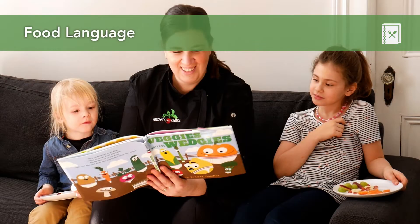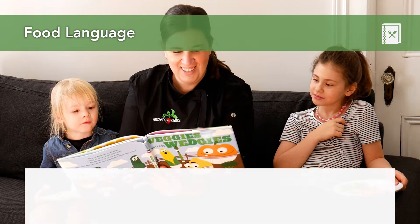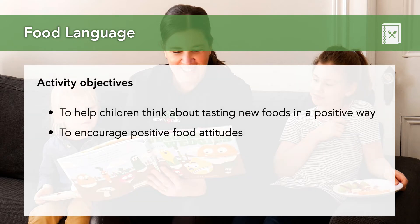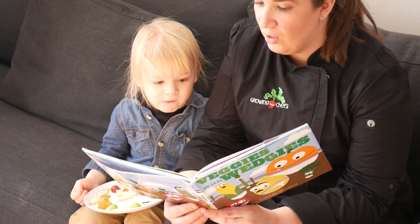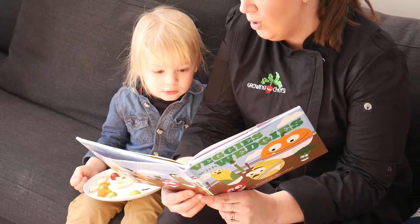The first activities we'll talk about have a focus on food language, also using food reviews and food memories. These activities can be appropriate and adaptable for kindergarten up to grade 6 and potentially even further up to grade 8. The objective is to help children begin to think about tasting new foods in a constructive and positive way, encouraging a positive food attitude and considering the role that food plays in their lives and memories beyond simply fueling their bodies.